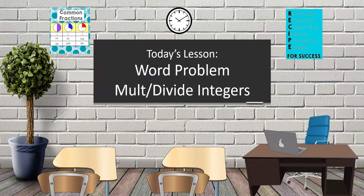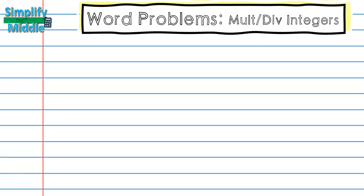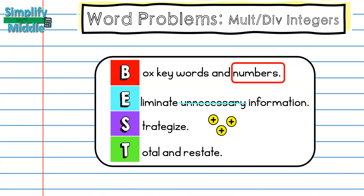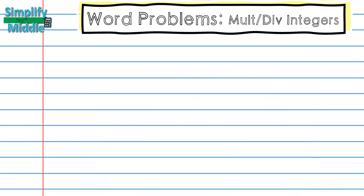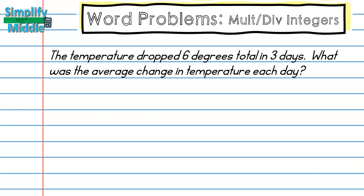Welcome to today's lesson: word problems — multiplying and dividing integers. In our last video we looked at the BEST method, where we box our keywords and numbers, eliminate unnecessary information, strategize, and find the total and restate. We'll be using that method for multiplying and dividing, so let's get started.